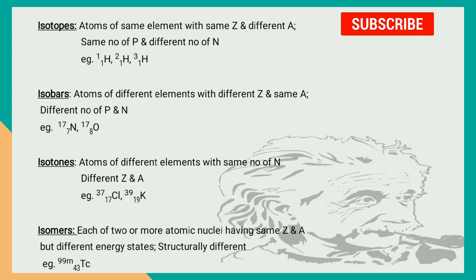Isobars are atoms of different elements with different atomic number but same mass number. Protons and neutrons both are different in quantity in both these atoms. For example, nitrogen with 7 protons and 10 neutrons, and oxygen with 8 protons and 9 neutrons. Here you can see the protons and neutrons both are different in number, but the total atomic mass adds up to 17. So these are considered as isobars.